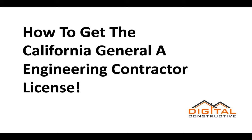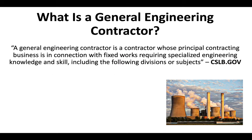Welcome to DigitalConstructive.com. In this video we're going to be talking about how to get the California General A Engineering Contractor License. A General Engineering Contractor is a contractor whose principal contracting business is in connection with fixed works requiring specialized engineering knowledge and skill, including the following divisions or subjects. That's a definition straight from the CSLB website — the Contractors State License Board — which essentially governs engineering contractors in California.